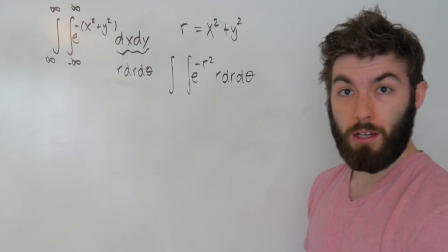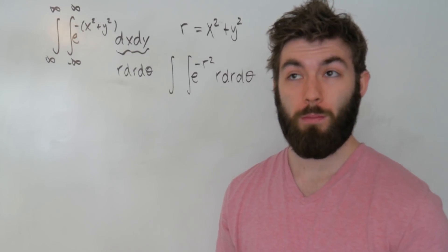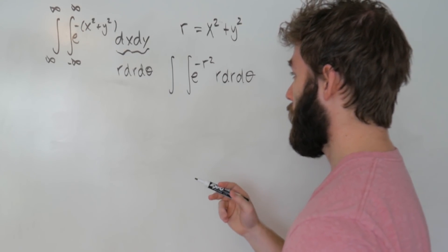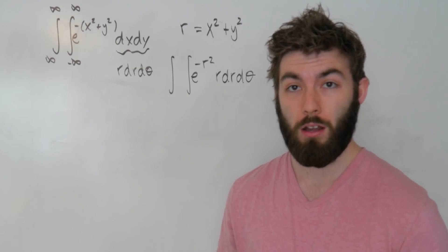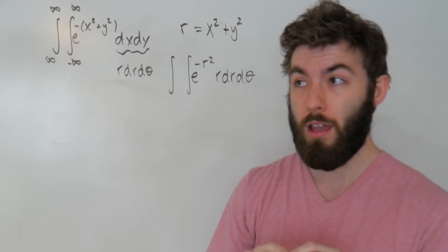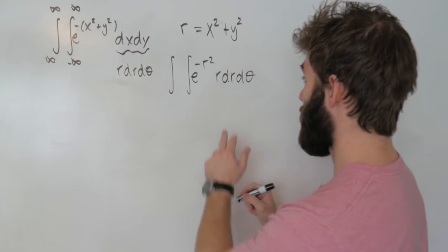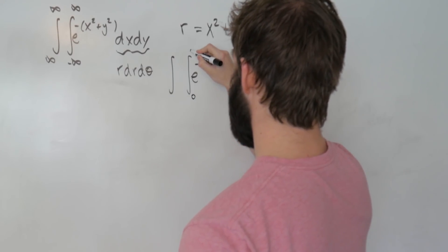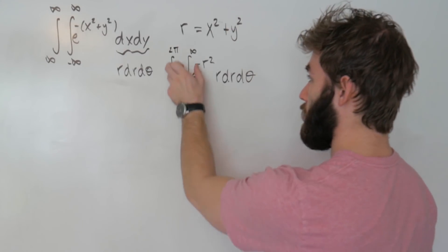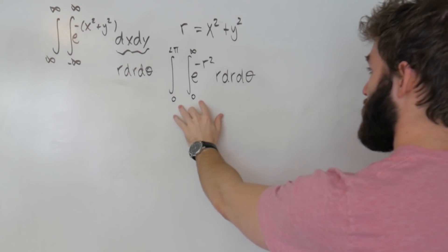Now we need to figure out the limits of integration. To span the full xy-plane we let x and y each go from negative infinity to infinity. In polar coordinates, instead of going to negative infinity, we stretch from r equals 0 out to infinity and rotate a full 360 degrees. So r goes from 0 to infinity, and θ goes from 0 to 2π. This covers the same ground as integrating over the entire xy-plane.